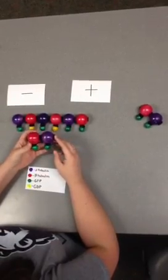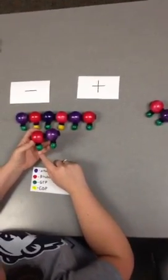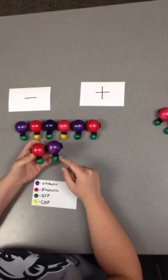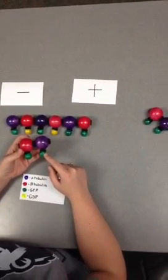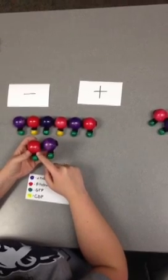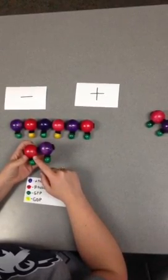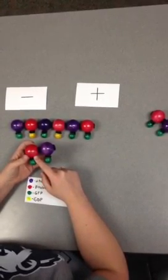Each alpha and beta in the tubulin dimer is bound to a GTP. The GTP bound to the alpha-tubulin is for structure and it will not be hydrolyzed. The GTP on the beta-tubulin will be hydrolyzed after it's added on to the microtubule.